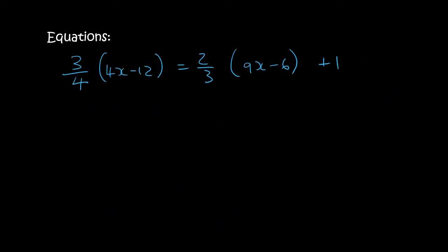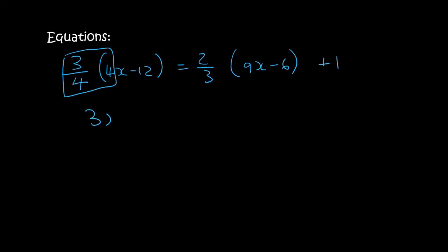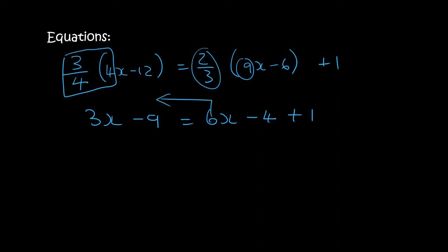For this one, don't let the fractions put you off — use your calculator. So 3 over 4 times 4 just becomes 3x, 3 over 4 times 12 becomes 9, 2 over 3 times 9 is 6, and 2 over 3 times 6 is 4. It turns out to be quite straightforward. Now take all the x's to the left and all the numbers to the right.